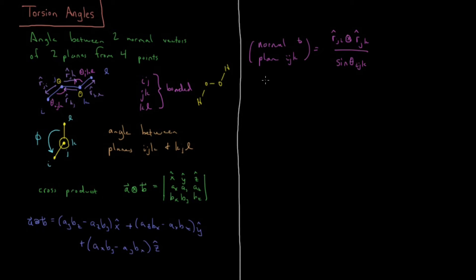And same thing for normal to plane J, K, L. That is going to be defined by R-hat K, J cross R-hat K, L, divided by, and we're going to normalize that vector by dividing by the sine of theta J, K, L. So we've used all six quantities that we defined initially in our I, J, K, L set there. So that's why we had to define all those cases. So now we have these two normal vectors here.